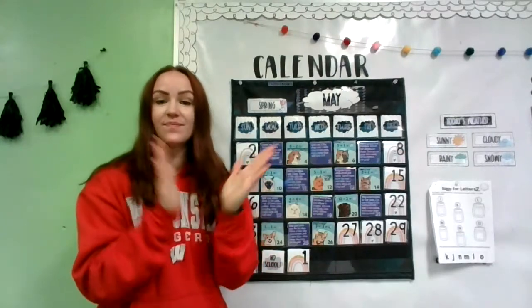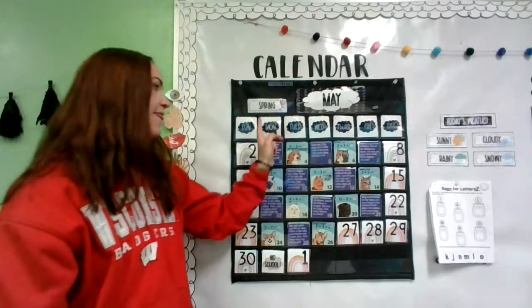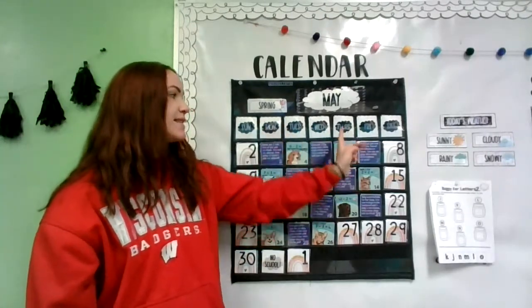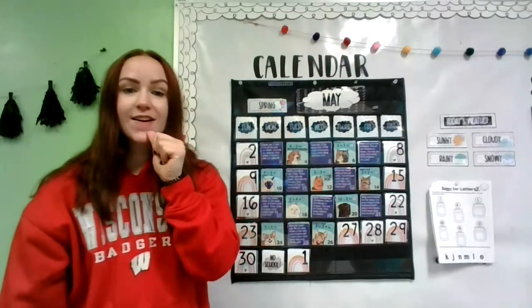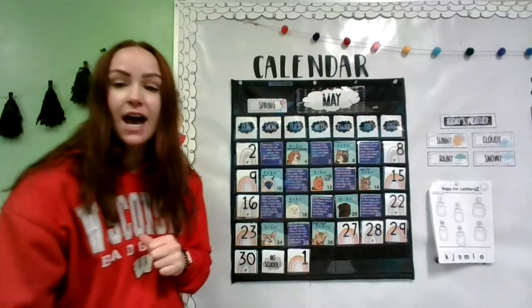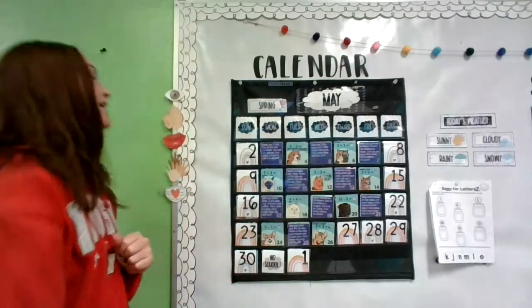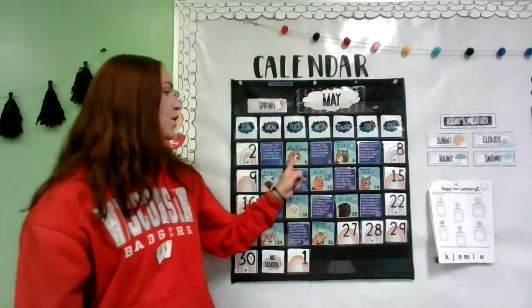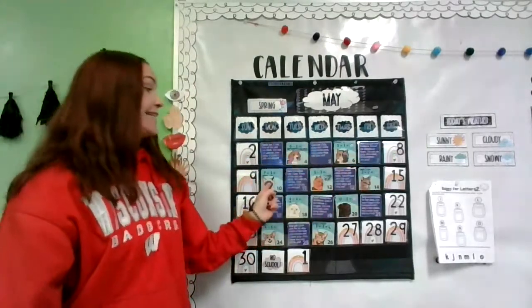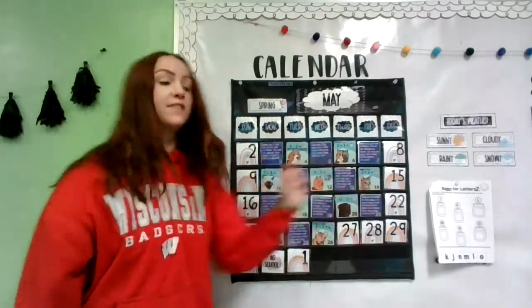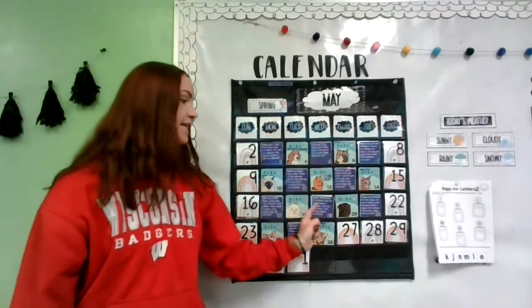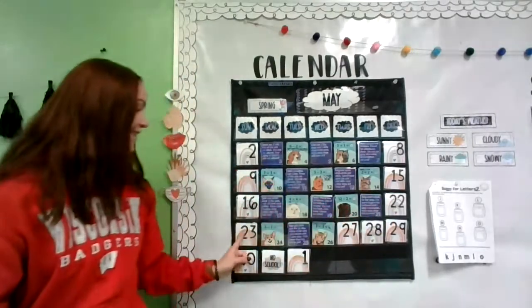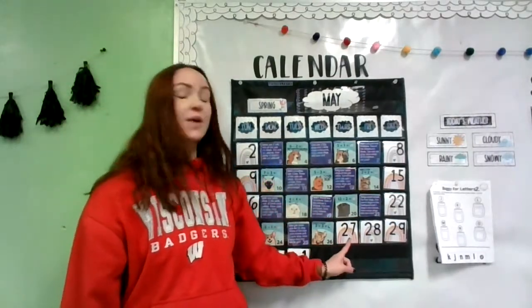Today is a remote learning day — count with me quickly to see how many days we have been in May. Let's get started: one, two, three, four, five, six, seven, eight, nine, ten, eleven, twelve, thirteen, fourteen, fifteen, sixteen, seventeen, eighteen, nineteen, twenty, twenty-one, twenty-two, twenty-three, twenty-four, twenty-five, twenty-six, twenty-seven.